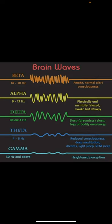Gamma, which isn't often even mentioned is anything above 30. So above beta when we have heightened perception.